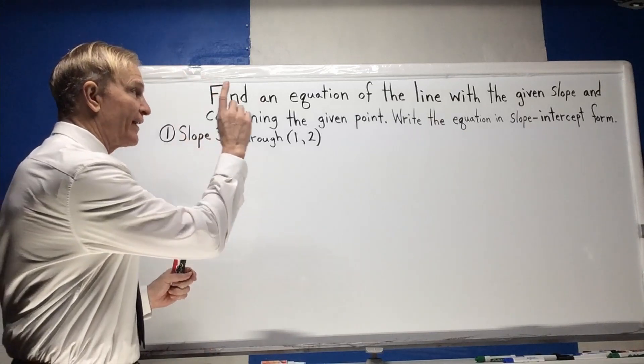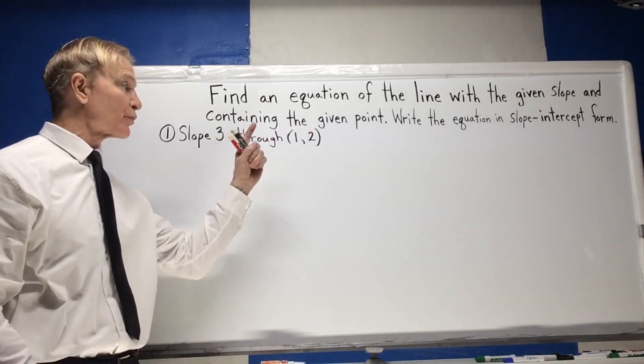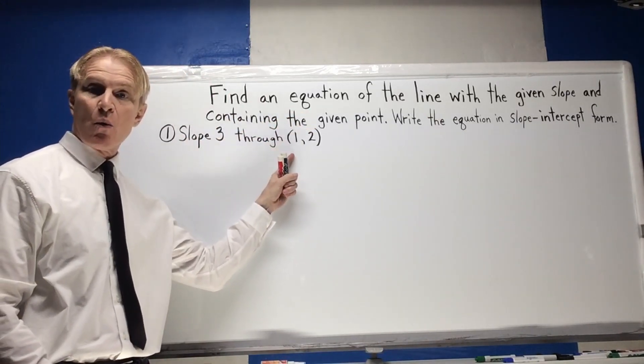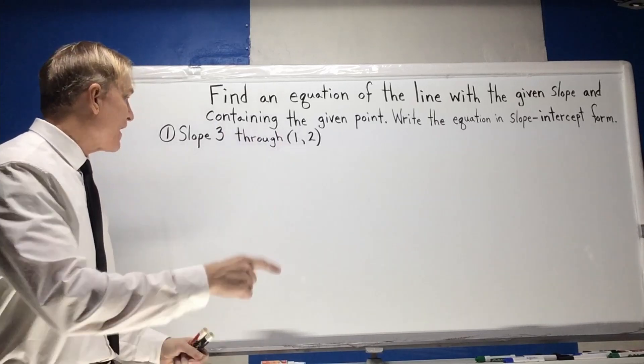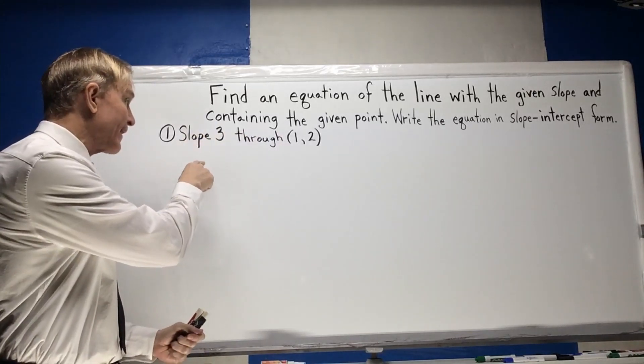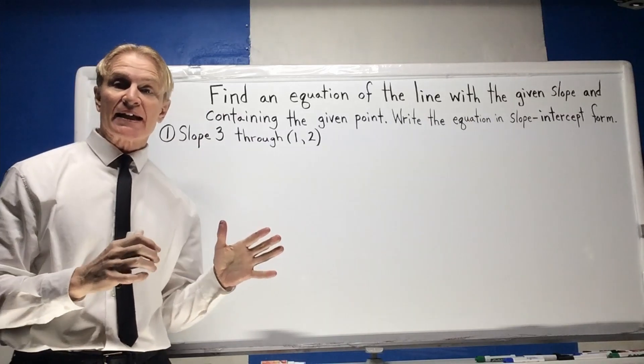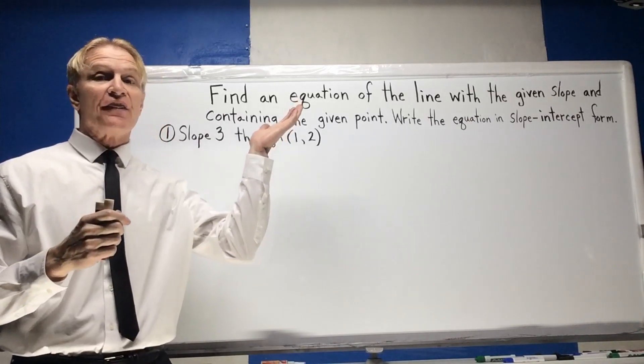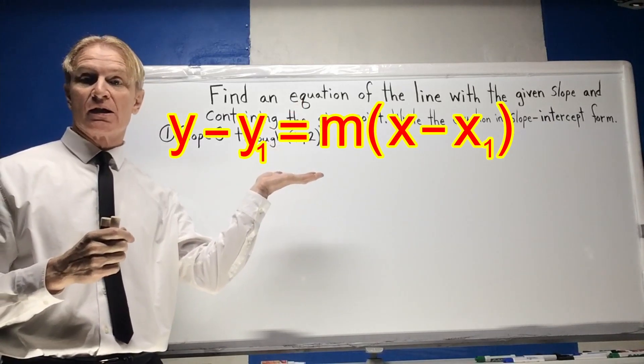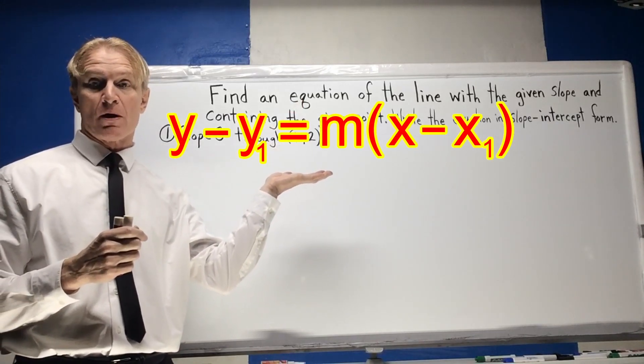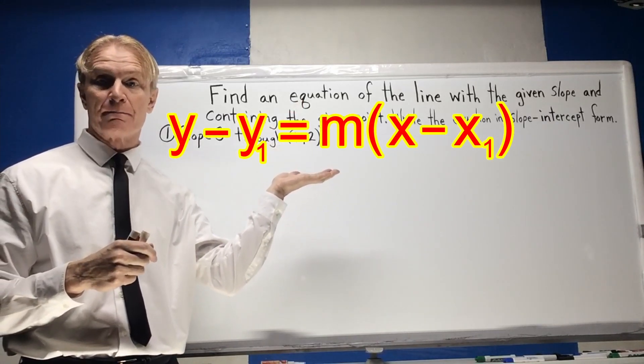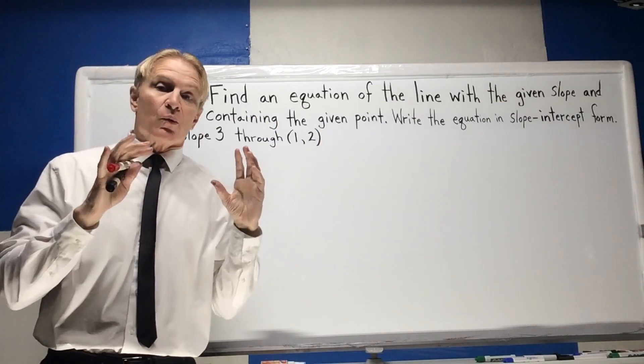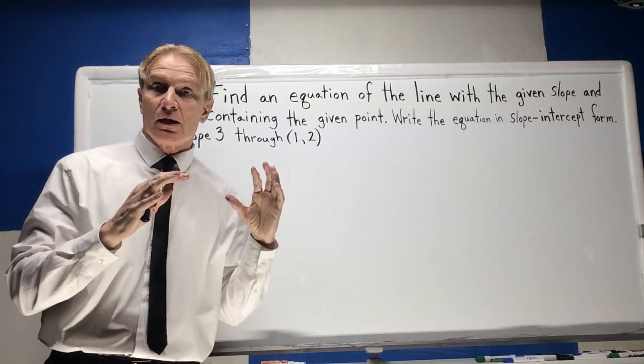We are asked to find the equation of the line that goes through this point here, 1, 2, and has the slope of 3. But in this case, we don't have the luxury of the point-slope form or point-slope formula. So we're going to have to go through this another way.